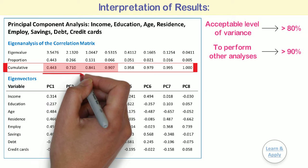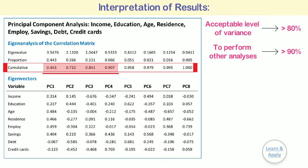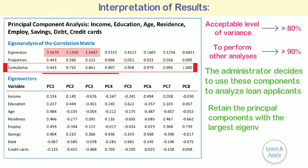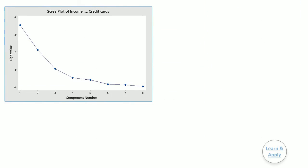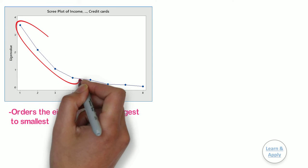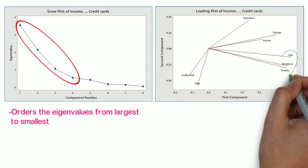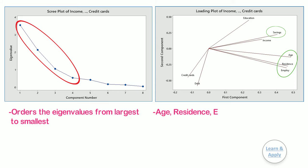The first four principal components explain 90.17% of the variation in the data. Therefore, the administrator decides to use these components to analyze the loan applicants. You can also use the size of the eigenvalue to determine the number of principal components. Retain the principal components with the largest eigenvalue, i.e., greater than 1. The scree plot orders the eigenvalues from largest to smallest. The ideal pattern is a steep curve, followed by a bend and then a straight line. Use the components in the steep curve before the point that starts the line trend. The loading plot visually shows the results for the first two components. Age, residence, employer, and savings have large positive loadings on component 1.